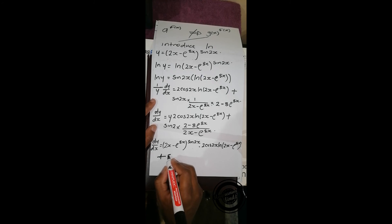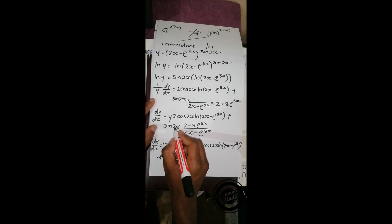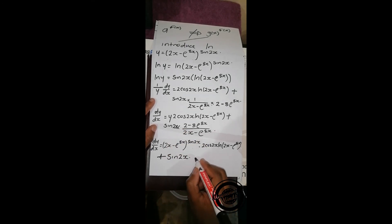plus sin(2x) times (2 - 8e^(8x)) all over (2x - e^(8x)), and that's it for this question.